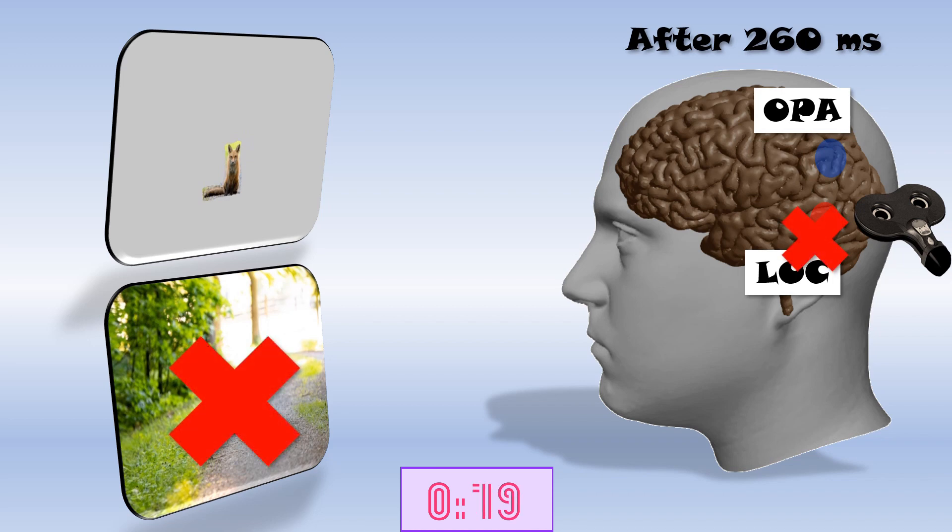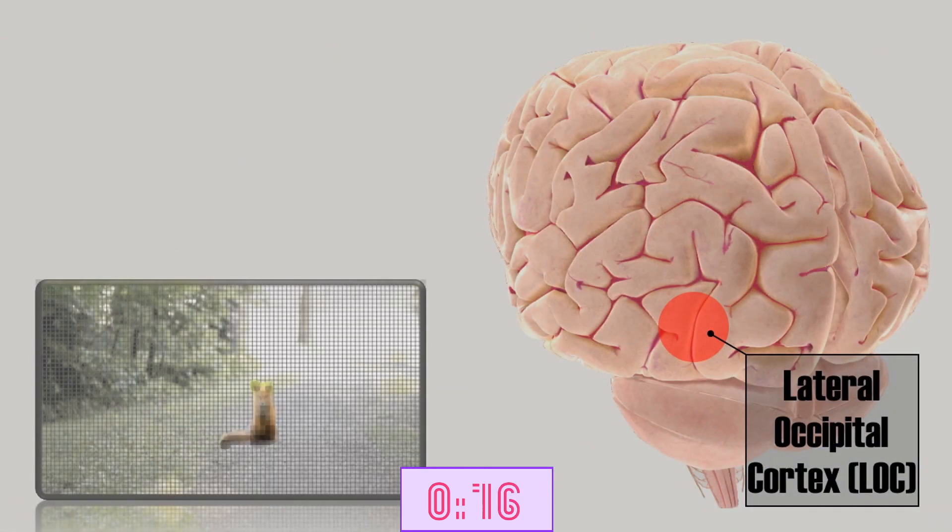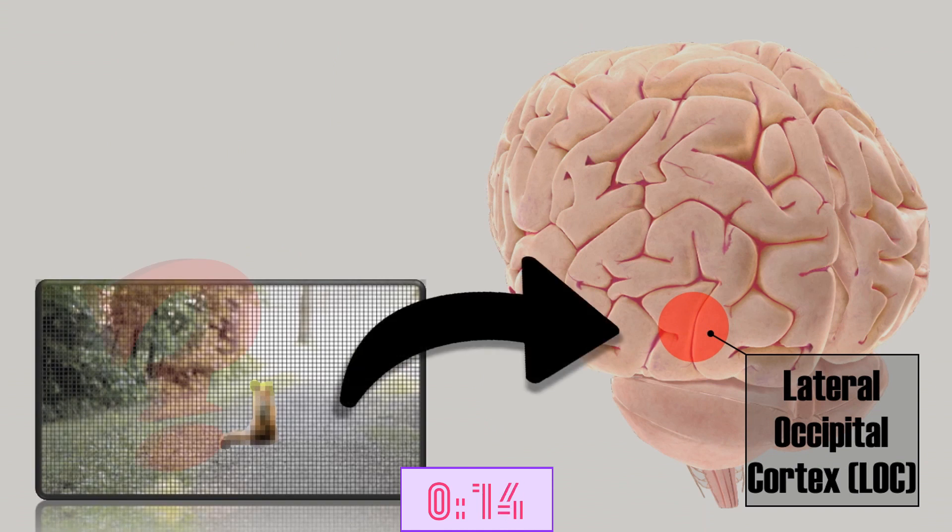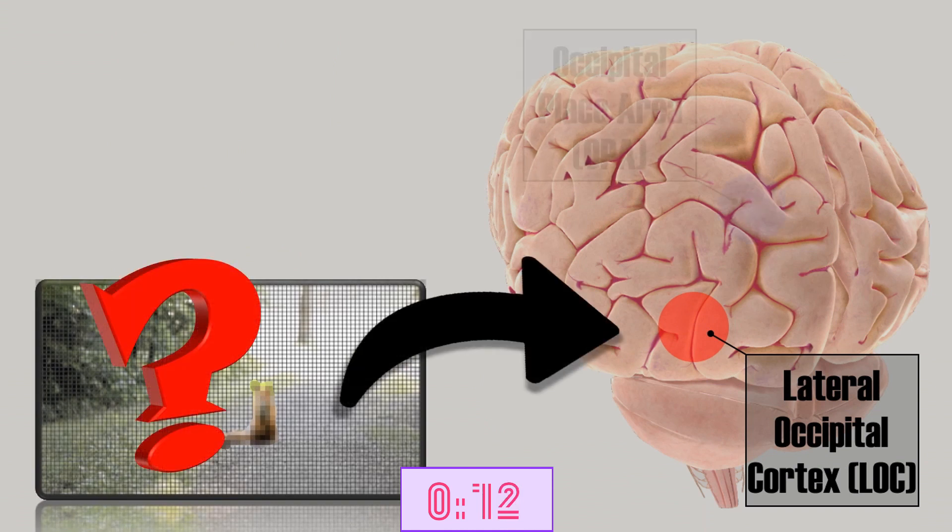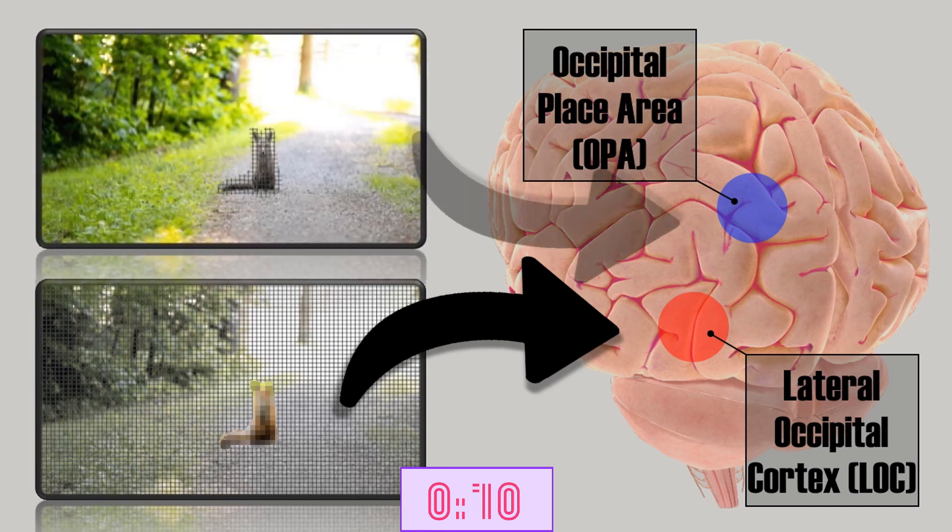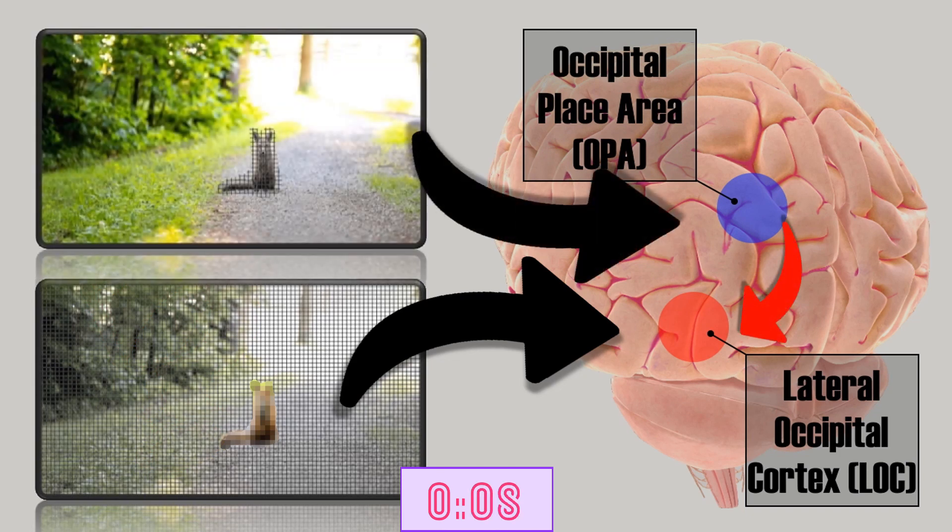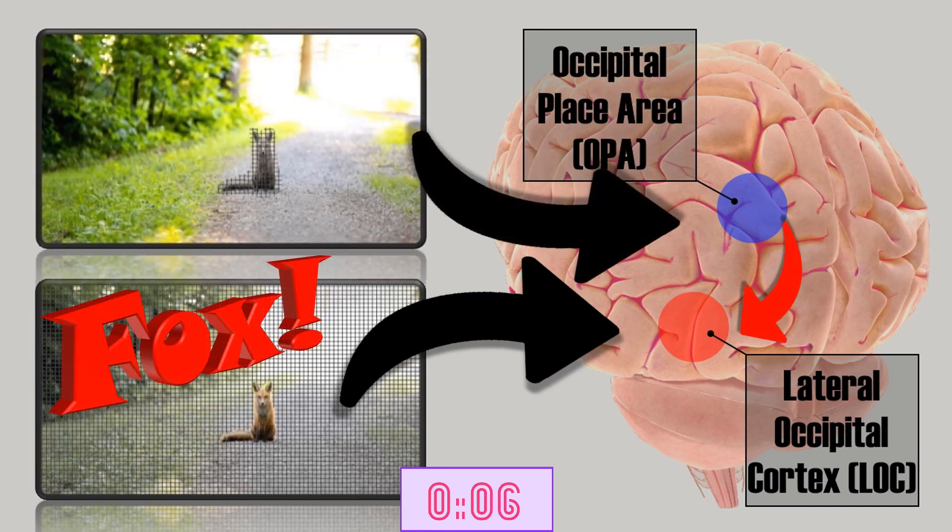Or, in other words, when the LOC cannot identify an object the first time, it waits for the arrival of scenery information. After the scenery information arrives, it attempts to recognize the object again, a second time, which suggests that object and background information is combined in the lateral occipital cortex.